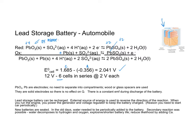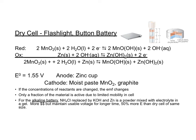For the second one — the dry cell, the flashlight, the button battery — these are primarily made with magnesium and zinc. The anode is a zinc cup, and the zinc undergoes oxidation from 0 to +2. The manganese undergoes reduction from +4 to +2. You do not have to memorize any of these equations; you just need to identify what is going on. These usually have an E⁰ cell of 1.55 volts.